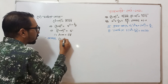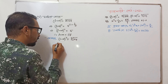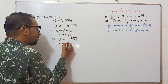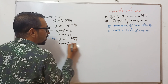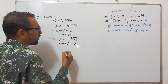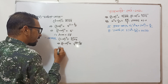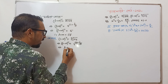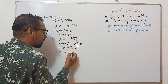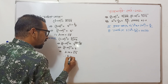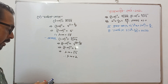L plus M whole square equal to 5. Then 1 divided 3, and back. L minus M whole square equal to 4, so L minus M equal to root over 4.